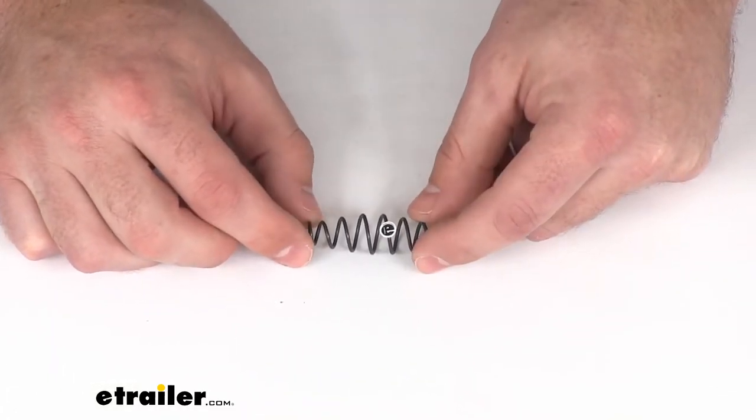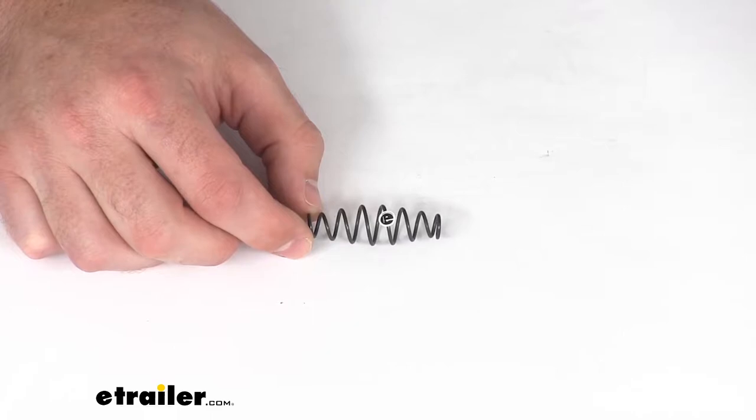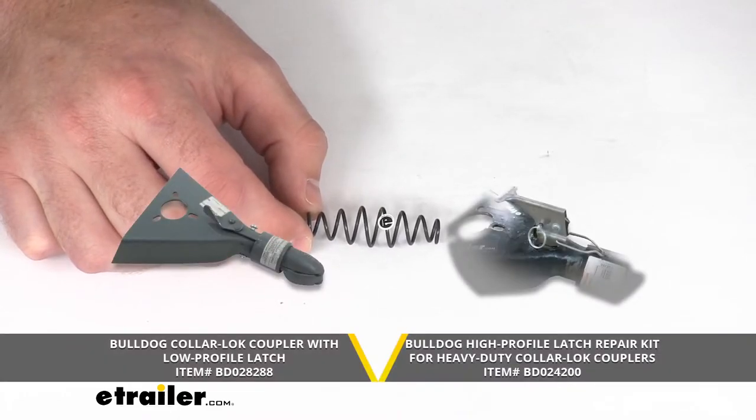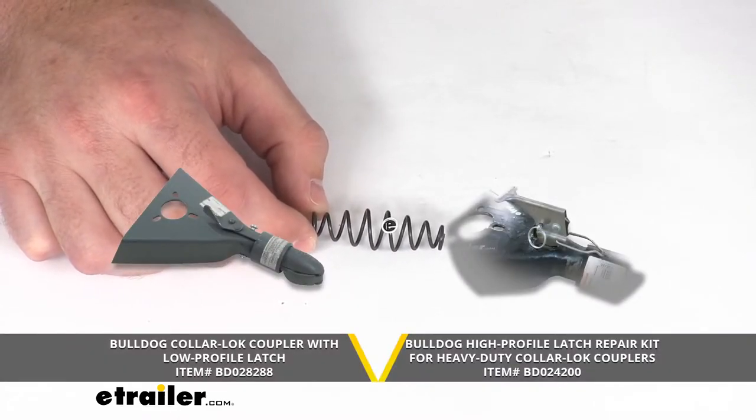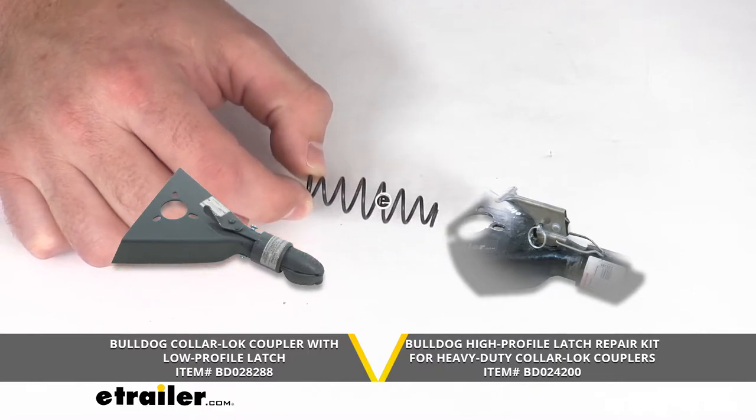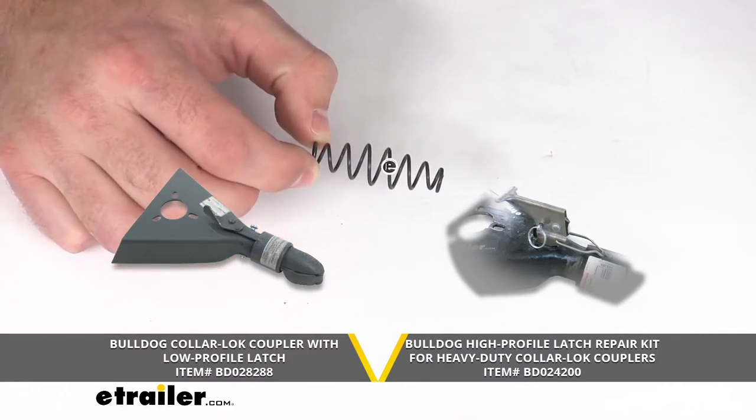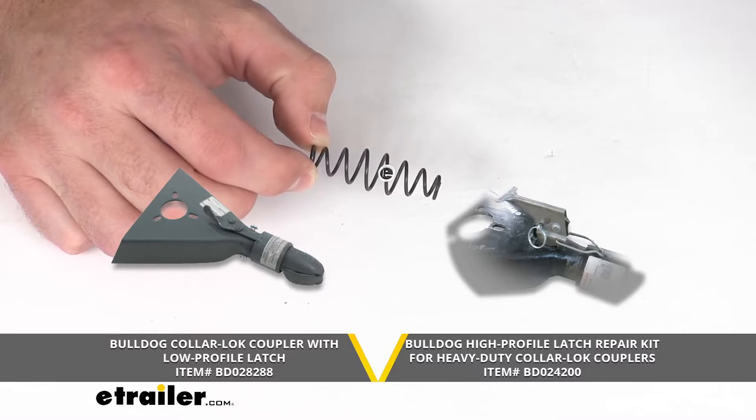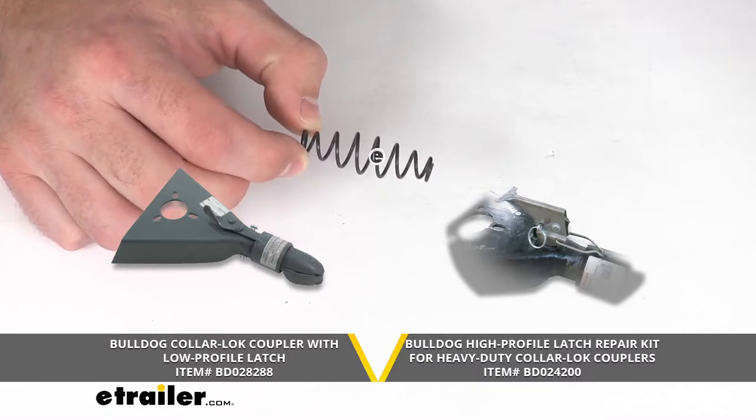This is going to replace the cap spring on your Bulldog collar lock coupler with low profile latch. You can also replace the spring in your Bulldog high profile latch repair kit for heavy duty collar lock couplers.